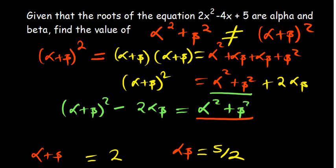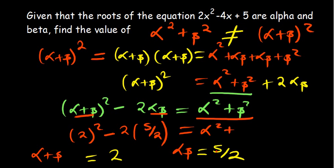So you realize that α + β, the value has been given to be 2. αβ, the value has been calculated to be 5/2. So on our right hand side, we have α² + β².